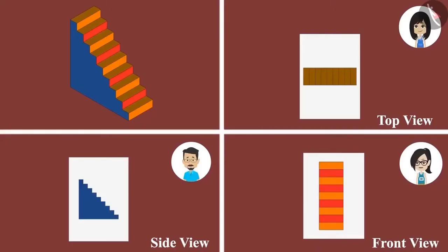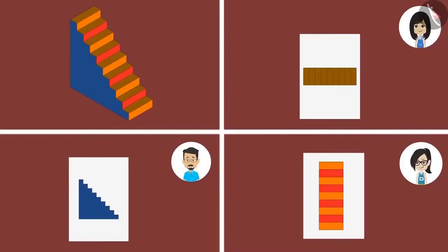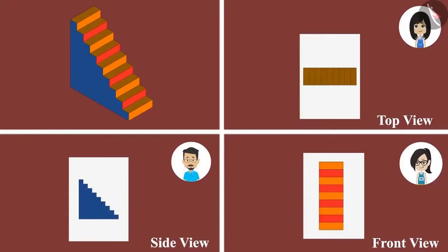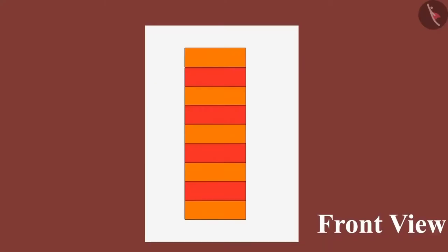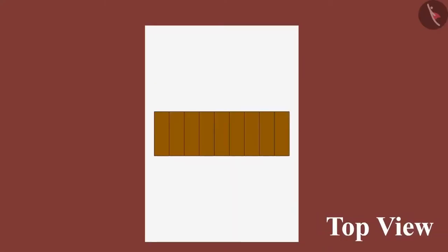I drew the staircase from the front. Uncle, which view would it be called? Vandana, this will be called the front view. That means when an object is seen from the front, then its front view will be visible. Yes, and that's why Vandana's drawing appears to be different from our drawings. Yes, this is a colorful rectangle. So, did you understand? This is the front view of the staircase. This is the side view. And this is the top view.